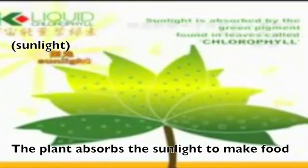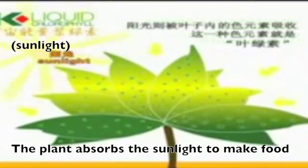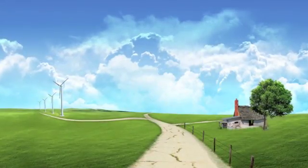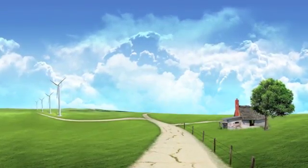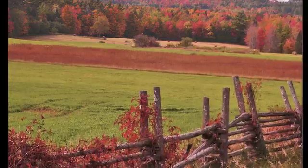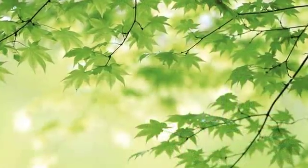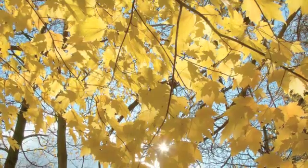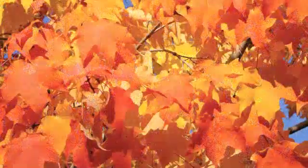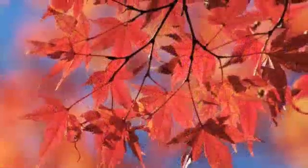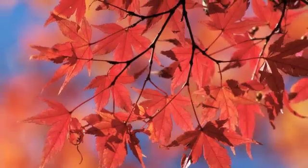But in the fall, because of the length of daylight and temperature changes, the leaves stop making food. This means that the chlorophyll will break down and the green color will fade away, showing the yellow to orange colors in the fall.